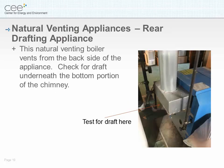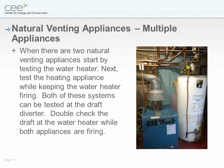Natural venting appliances — rear drafting appliance. This natural venting boiler vents from the back side of the appliance; check for draft underneath the bottom portion of the chimney. When there are two naturally venting appliances, start by testing the water heater. Next, test the heating appliance while keeping the water heater firing. Both of these systems can be tested at the draft diverter. Double check the draft at the water heater while both appliances are firing.